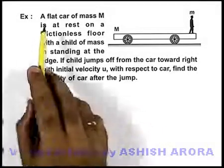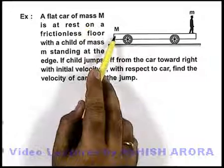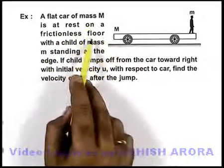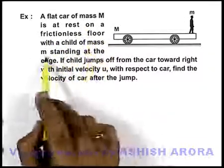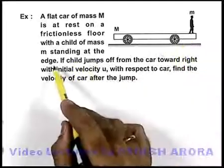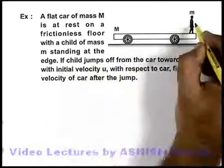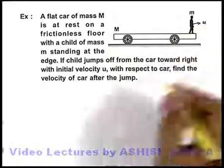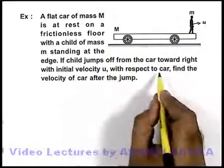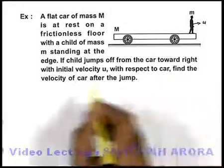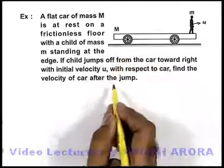In this example, we are given a flat car of mass capital M at rest on a frictionless floor, with a child of mass small m standing at the edge. If the child jumps off from the car toward right with initial velocity u, and this speed u is with respect to the car, we are required to find the velocity of car after the jump.